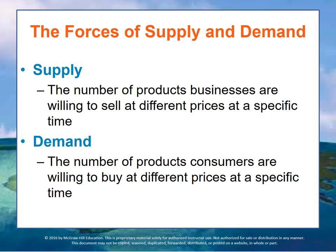To make this process easier across many different product lines, we use an exchange currency that measures value. In the United States, we use U.S. dollars to measure this exchange value. The common currency simplifies the bidding process and the exchange process. It's used to balance what is available — which is supply — with what people want — which is demand — across many, many different product lines.